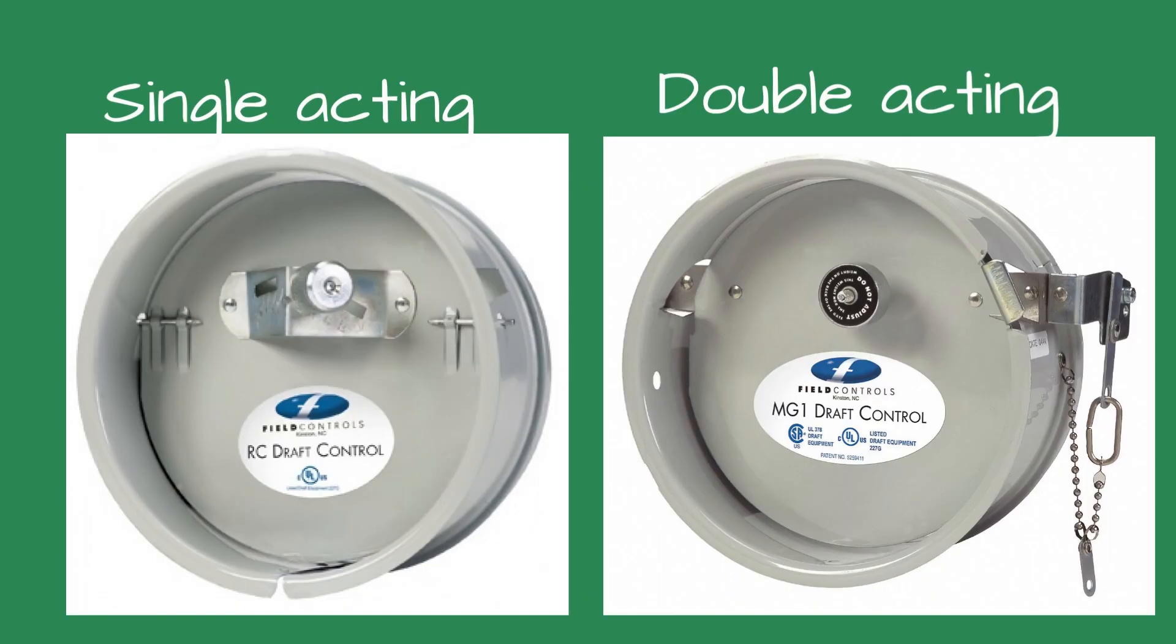When choosing a barometric damper, there are two types: single and double-acting. A single-acting damper has a stop that only allows the damper to swing one way. A double-acting one allows the damper to swing two ways. The single-acting damper will close if positive pressure exists inside the stack. The double-acting damper could allow spillage of the flue gases into the boiler room in the event of blocked flues or downdrafts.